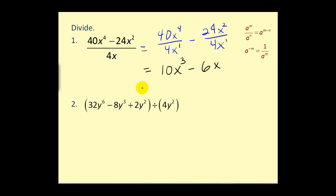Now, we can write a division problem involving a monomial in a variety of ways. As you can see here, number one is written as a fraction, but we can also write it as a division problem. So this would be the same as thirty-two y to the sixth divided by four y squared, minus eight y to the third divided by four y squared, and lastly, plus two y squared divided by four y squared.